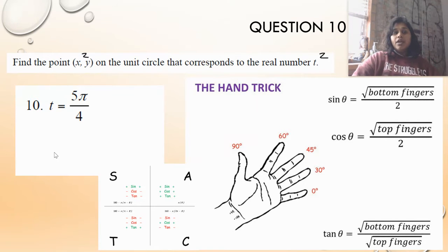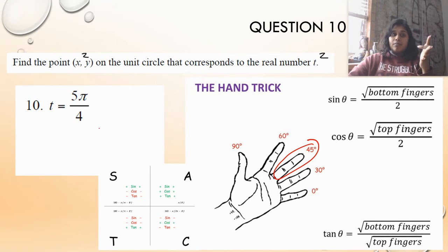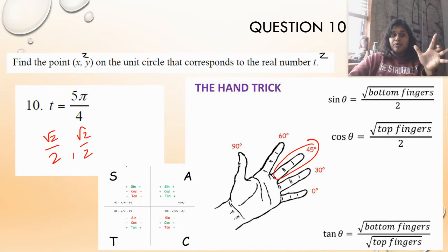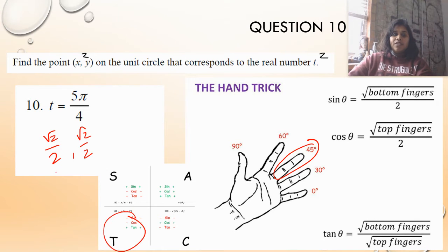Let's do that same thing with the hand trick. 5π over 4 isn't on the hand directly — I just have π over 4. So I come over to π over 4, fold down my finger, and write down my x (cosine): square root of 2 over 2, from my top two fingers. My sine is also square root of 2 over 2. Then, knowing 5π over 4 is in quadrant 3, both cosine and sine must be negative.